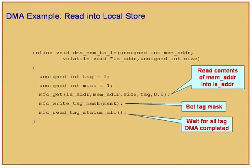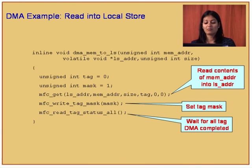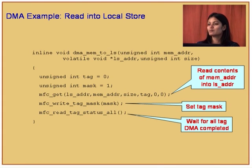A typical example of DMA memory to local store: define the tag mask, do an MFC_get operation — it reads contents from mem_address in the effective address space and puts it at the address pointed to by ls_addr. Then check the status and wait for all DMA operations to complete. When done with computation on the SPE side, use the MFC_put instruction to write the result back to main memory.